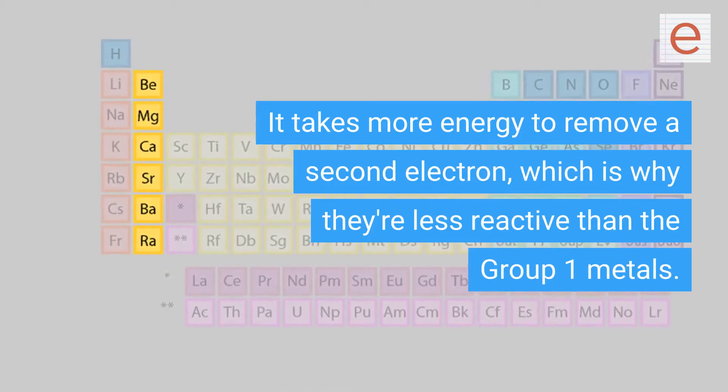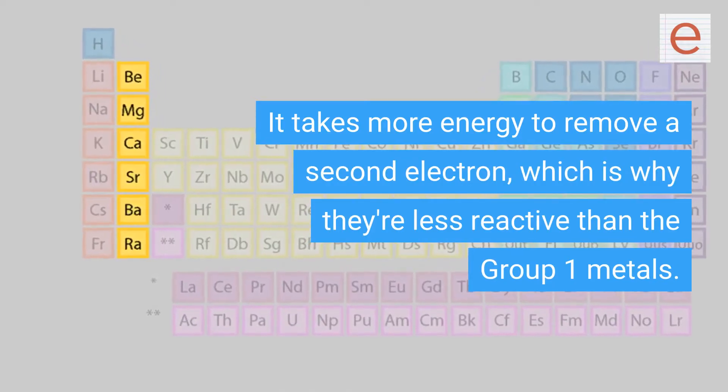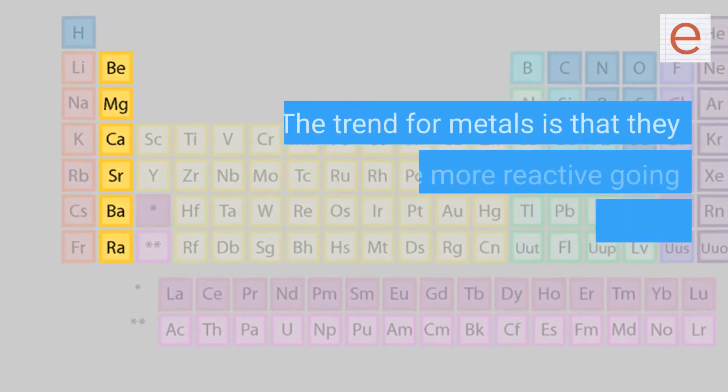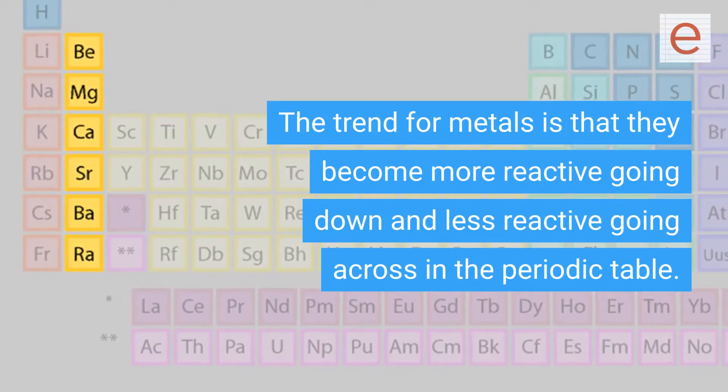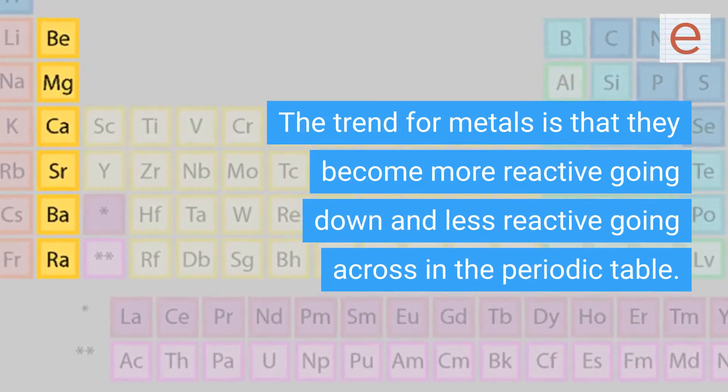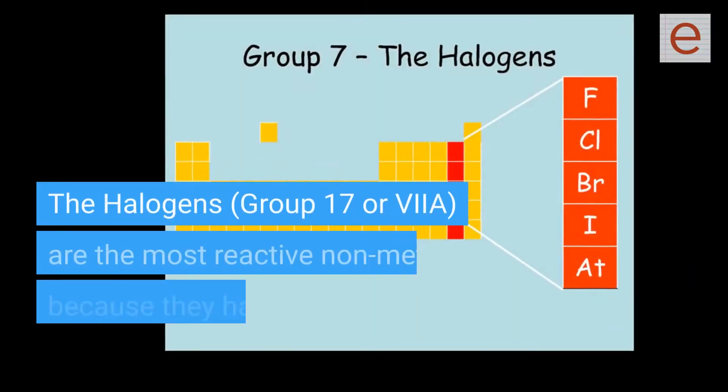The trend for metals is that they become more reactive going down and less reactive going across in the periodic table. The halogens, group 17, are the most reactive nonmetals because they have the highest tendency to gain an electron.